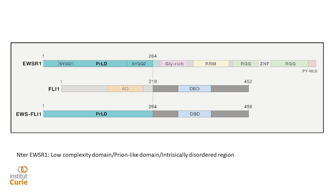The N-terminal part of EWS is what is called an intrinsically disordered domain, or prion-like domain, or low-complexity domain. It's a domain composed of a few amino acids forming some kind of repeated motif along this N-terminal part, without any structure in terms of beta-sheets or alpha-helices — an unstructured domain. I will speak a bit about this later.